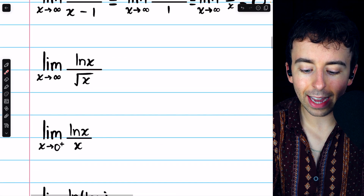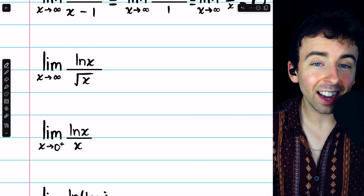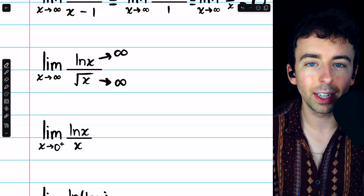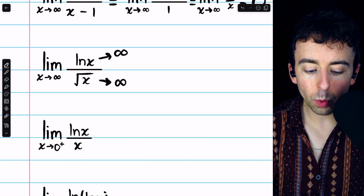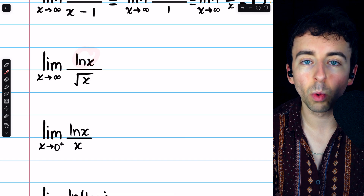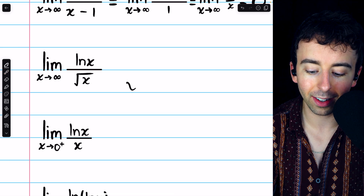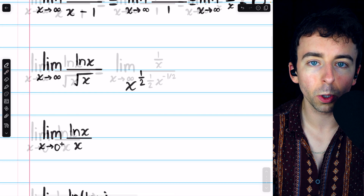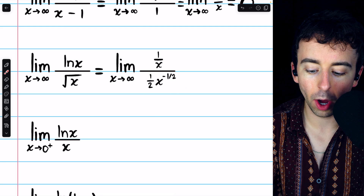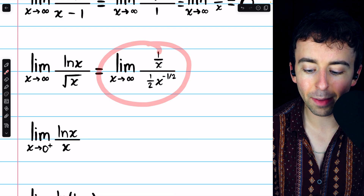Next, we're evaluating the limit of the natural log of x divided by the square root of x as x goes to infinity. As x tends towards infinity, both the numerator ln x and the denominator square root of x tend towards infinity as well, so this is in an indeterminate form. We can apply L'Hopital's rule and differentiate the numerator and denominator. The derivative of ln x is 1 over x. The derivative of the square root of x is found by rewriting it as x to the 1/2 and applying the power rule, giving us 1/2 times x to the negative 1/2. So 1 over x is in the numerator, giving us this new limit expression.